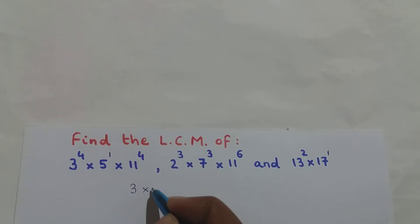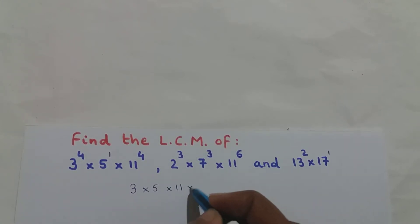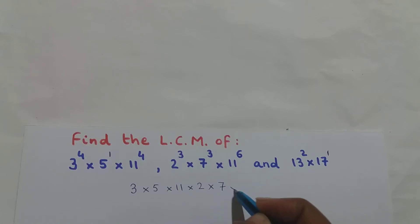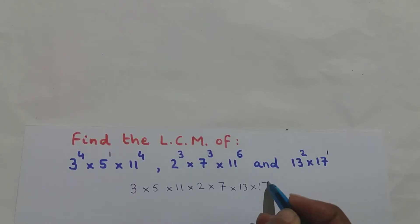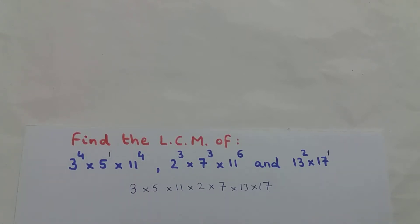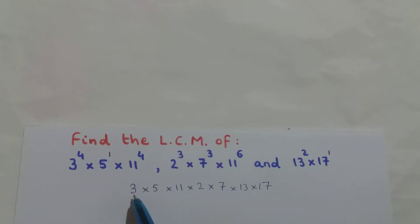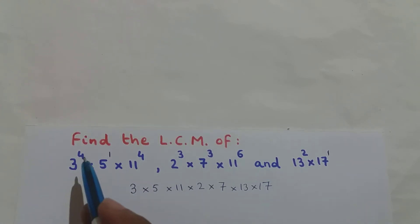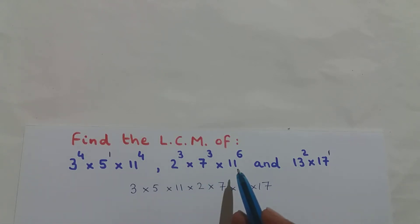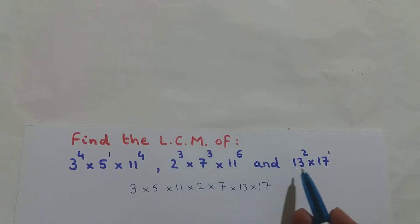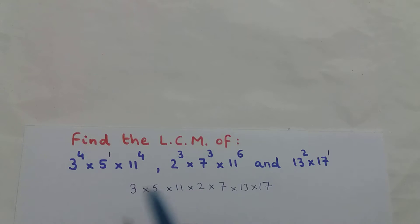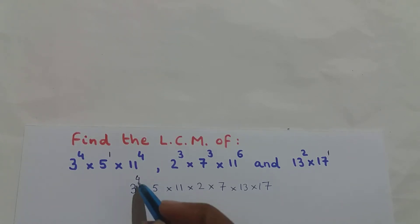I will write them down: 2, 3, 5, 7, 11, 13, and 17 — these are the 7 different bases. Now, what is the exponent of base 3? In the first expression I have 3 raised to the power of 4. Base 3 doesn't occur in the other two expressions. So the exponent of base 3 is 4.